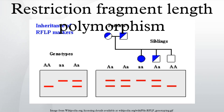Hybridization of the membrane to a labeled DNA probe then determines the length of the fragments which are complementary to the probe. An RFLP occurs when the length of a detected fragment varies between individuals. Each fragment length is considered an allele, and can be used in genetic analysis.